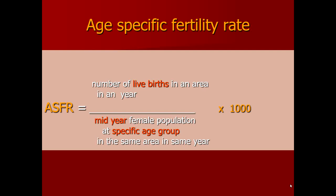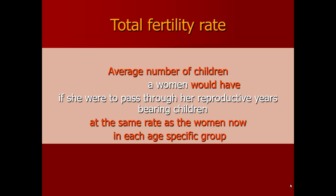We sum all the age-specific fertility rates and multiply by five to get the total fertility rate. We multiply by five because each age-specific fertility rate is calculated over a five-year span. The total fertility rate represents the average number of children a woman would bear if she follows the current fertility pattern through her reproductive lifespan.